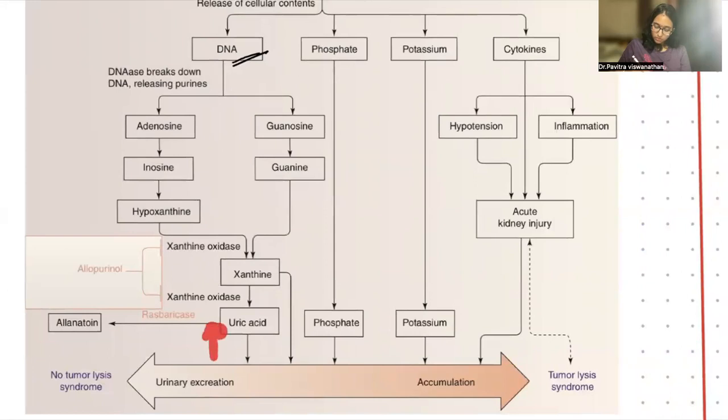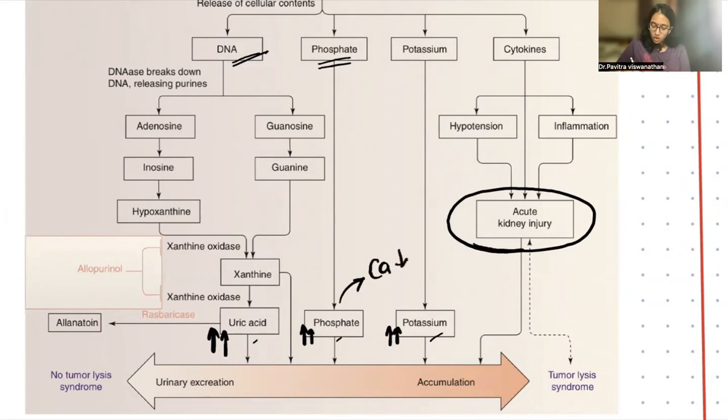More and more hypoxanthine forms, more and more xanthine forms because this xanthine oxidase converts it, more and more uric acid forms. The thing is uric acid, it's soluble only to a certain extent beyond which it precipitates. So once it precipitates, it blocks all your tubules. That is what you are most worried about. That is why you see hyperuricemia. Inside the cells, you have lot of phosphates. Phosphates get released. So your phosphate goes up. Intracellular is potassium. Potassium is released. So hyperkalemia happens. And whenever a cell breaks down, they release something called as a cytokine release syndrome. They will present as hypotension inflammation. And acute kidney injury is contributed by multiple things.